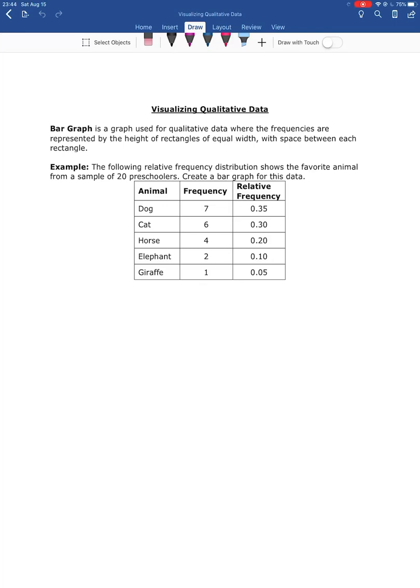Alright, so once we've organized our qualitative data, we could go ahead and look at a way to visualize that data. A lot of the stuff that we do with the early part of statistics—collecting the data, organizing the data, visualizing the data—is just a way so that we can picture what it is that's in front of us.